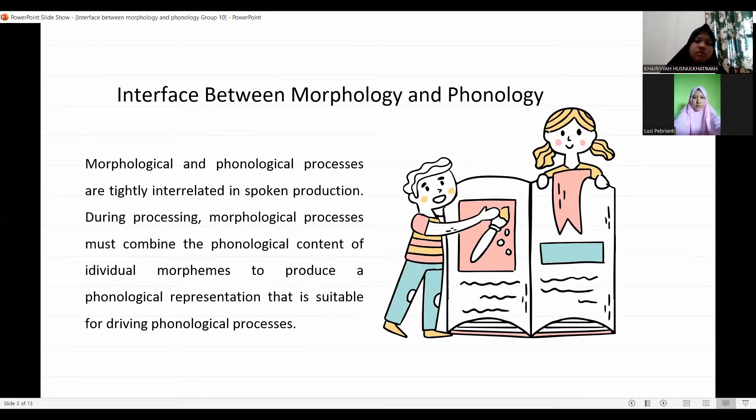Interface between Morphology and Phonology. Morphological and phonological processes are tightly interrelated in spoken production. During processing, morphological processes must combine the phonological content of individual morphemes to produce a phonological representation suitable for driving phonological processing.